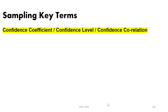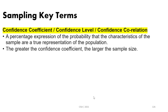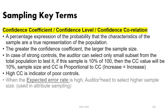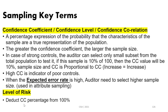The higher the confidence coefficient, the higher the sample size. When the confidence coefficient is high, the sample size is high; when it is low, the sample size is low. When we have confidence in the controls, we select a small sample size, resulting in a low confidence coefficient. A higher confidence coefficient is an indicator of poor controls. When the expected error rate is high, the auditor needs to select a higher sample size. The level of risk is simply 100 percent minus the confidence coefficient — for example, 5 percent when using a 95 percent confidence coefficient.